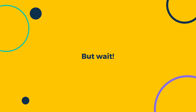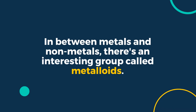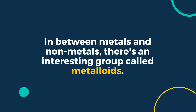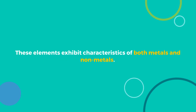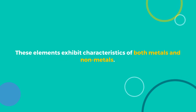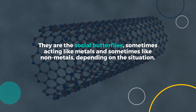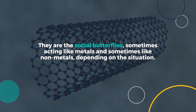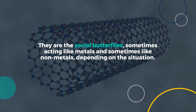But wait, there's more to this elemental party. In between metals and non-metals, there's an interesting group called metalloids. These elements exhibit characteristics of both metals and non-metals. They are the social butterflies, sometimes acting like metals and sometimes like non-metals, depending on the situation.